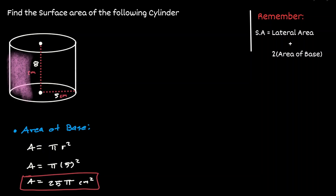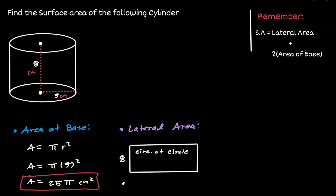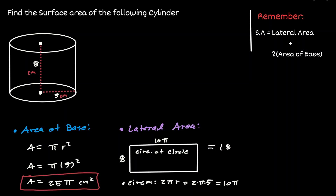Now let's find the lateral area, which we have shown is equivalent to the area of a rectangle. One side of this rectangle is the height of the cylinder, which is 8. The second side of this rectangle is the circumference of the circle on top, which is 2πr. Using a radius of 5, the circumference is 10π. So the lateral area is 8 times 10π, which is equivalent to 80π centimeters squared.